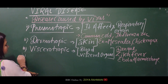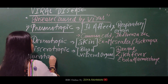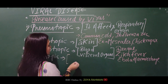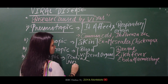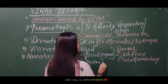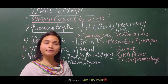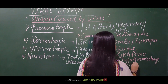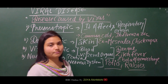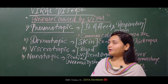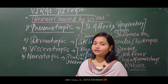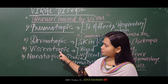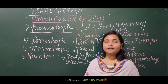The fourth category is neurotropic, which affects the central nervous system. Neurotropic disease directly affects our brain. Major examples are polio and rabies. So viral diseases are kept in four categories: pneumotropic, dermotropic, viscerotropic, and neurotropic.